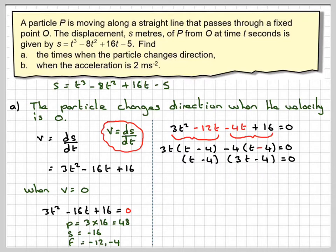You can always multiply back out again and check you get back to that. So either 3t minus 4 is equal to 0, 3t is equal to 4, adding 4 to both sides, dividing by 3, get t is 4 over 3. Or t minus 4 is equal to 0, which gives t is equal to 4.